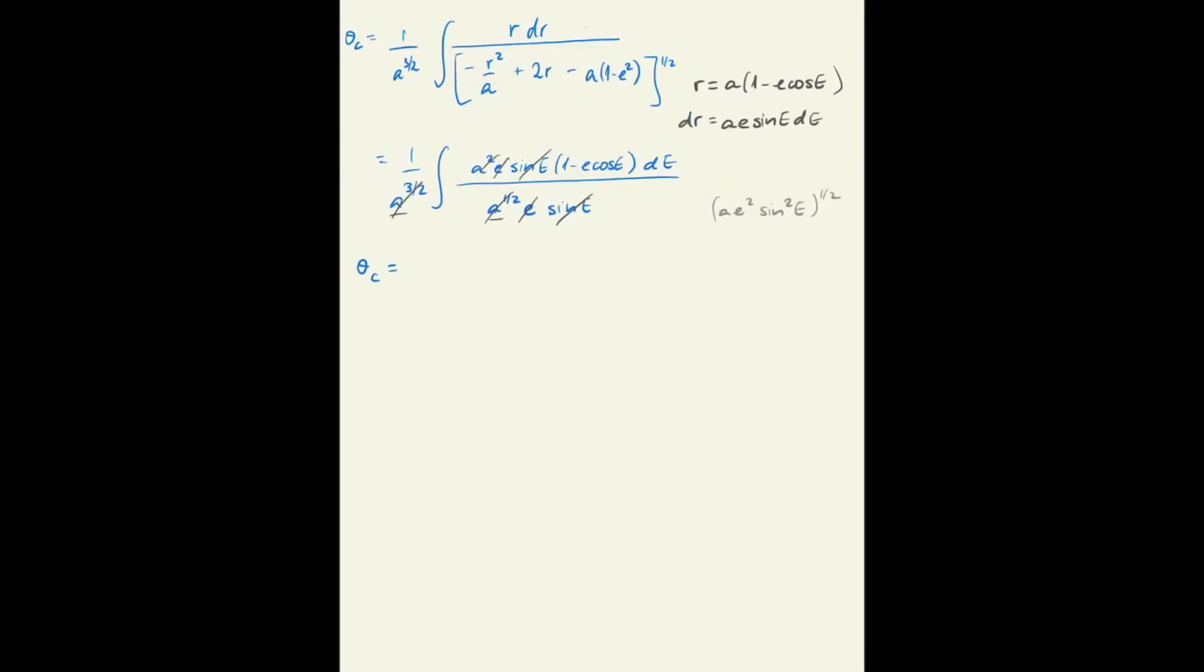So the angle then in the end is the integral of one minus e cosine E dE, which integrates very easily to integral dE minus the eccentricity times the integral cosine E dE, so that's E minus eccentricity times sine of E, and this is Kepler's equation.